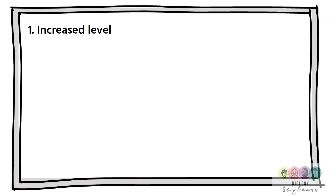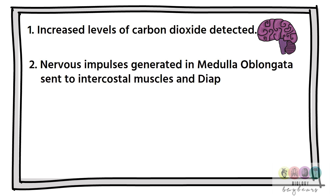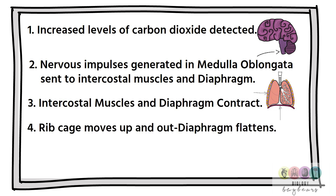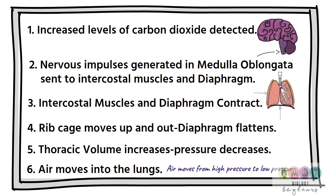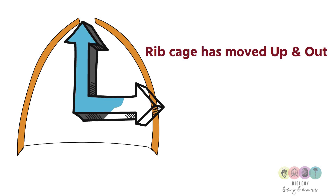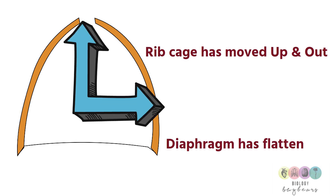Now the mechanics of breathing — inhaling first. Increased levels of carbon dioxide are detected, resulting in nervous impulses being generated in the medulla oblongata and being sent to the intercostal muscles and diaphragm. The intercostal muscles and diaphragm contract, the rib cage moves up and out, and the diaphragm flattens. The thoracic volume increases, pressure decreases, and air moves into the lungs because it moves from high pressure to low pressure.